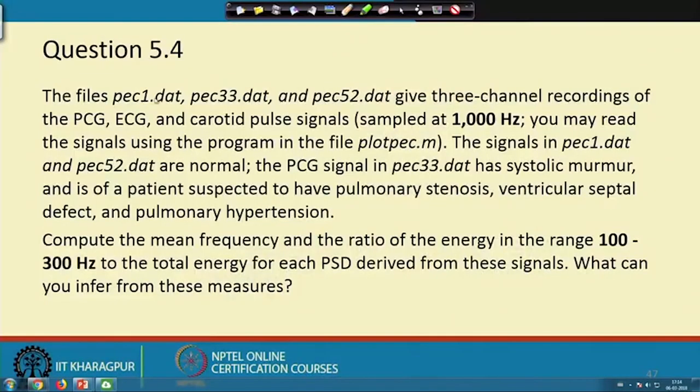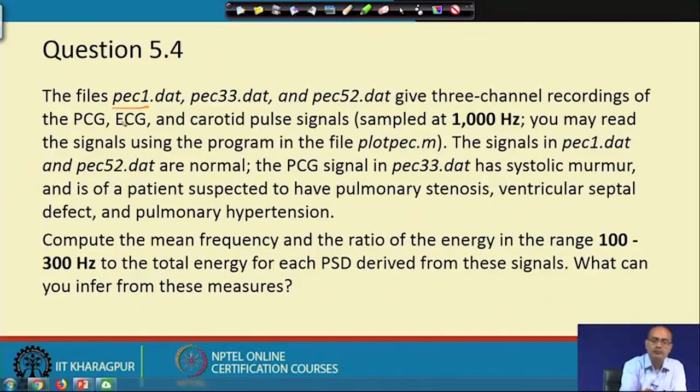In the fourth experiment of tutorial 5, we have three phonocardiogram signals: PCG or PEC1, PEC33, and PEC52. Each one is a three-channel recording. The first channel is PCG, second is ECG, and third is carotid pulse signal. All of these signals are sampled at 1 kilohertz.